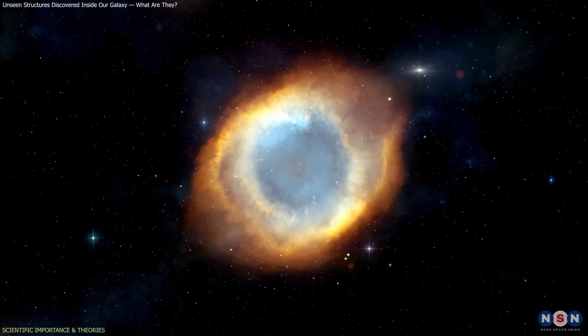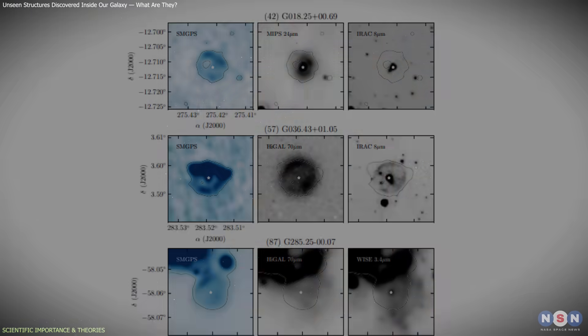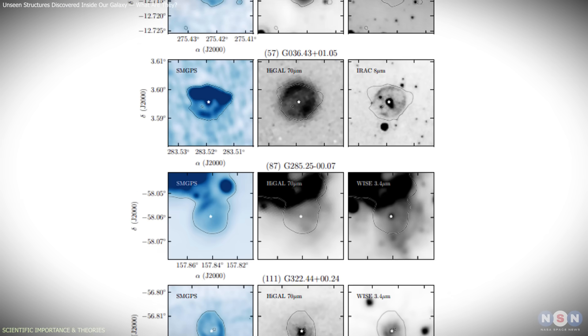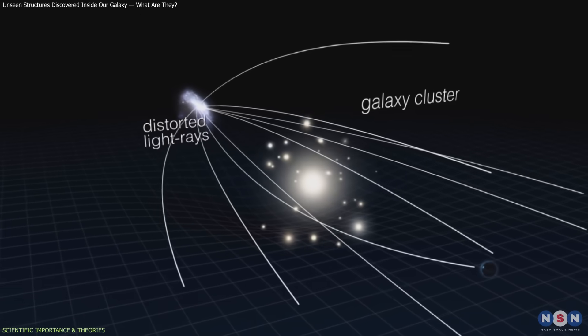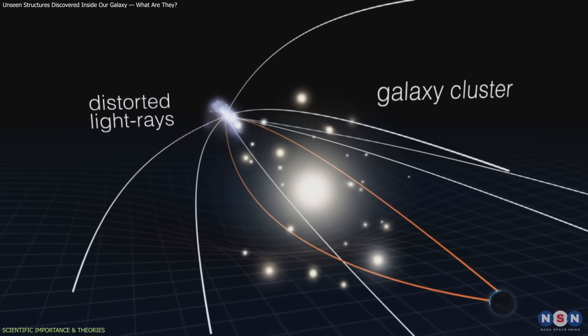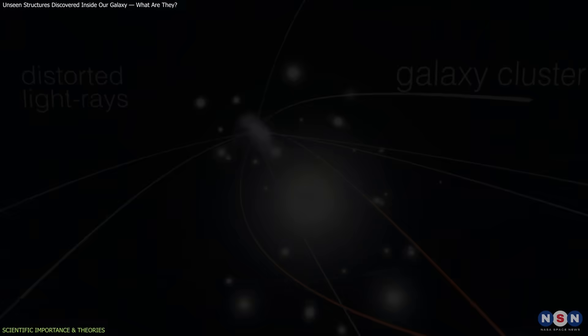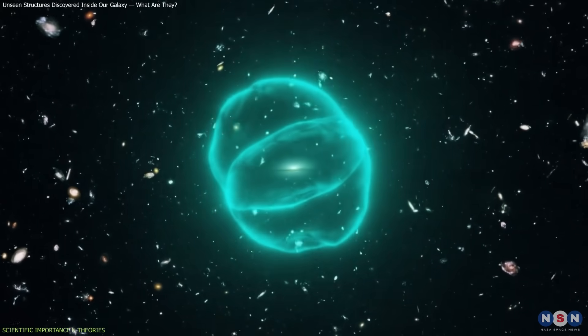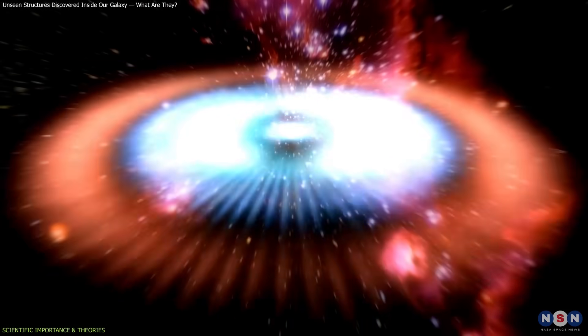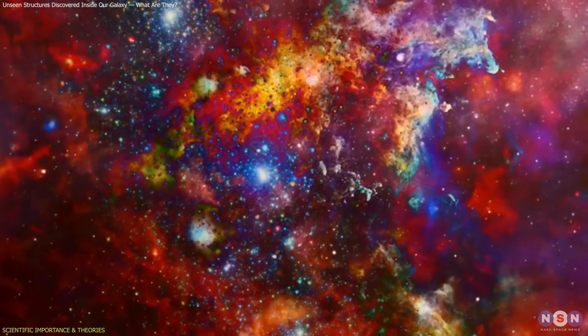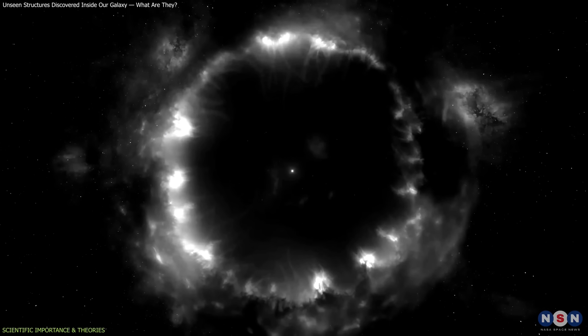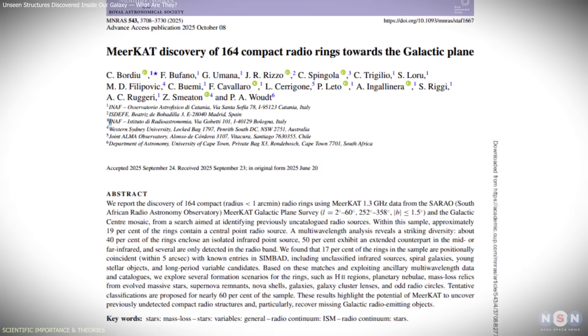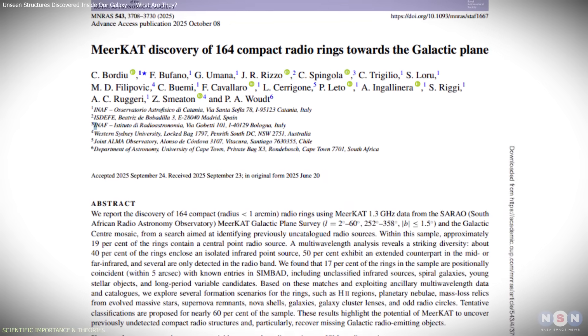But not all cases fit neatly into existing models. Rings lacking infrared or optical signatures could point to more exotic origins: gravitational lensing, bending light from distant background sources; galactic analogs of ORCs, possibly linked to shock fronts or energetic outflows; interactions involving magnetic fields or turbulent gas, creating ring-like structures without a single dominant source.